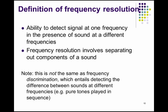You see how masking plays into that — masking is losing that ability. When you're able to detect a signal at one frequency in the presence of another frequency, you have frequency resolution. Frequency resolution involves separating components of a sound, because usually sounds have a whole range of frequencies. Note that this is not the same as frequency discrimination — frequency discrimination is what we measure as the JND of pitch perception, being able to discriminate 1000 Hz from 1005 Hz. That's different from frequency resolution, which is detecting one frequency in the presence of another.